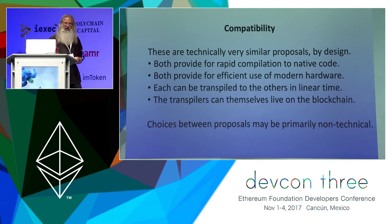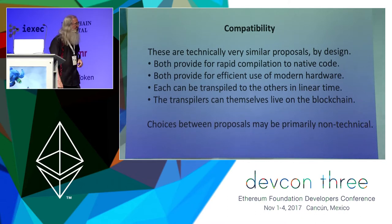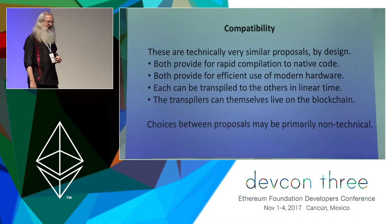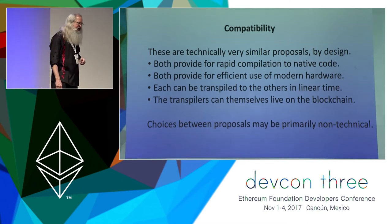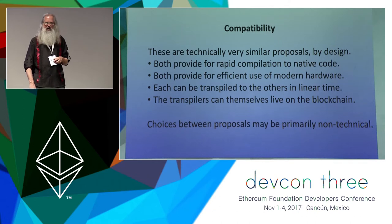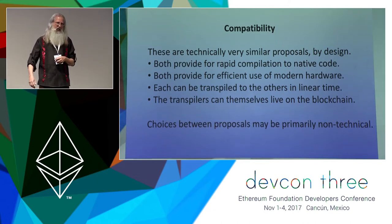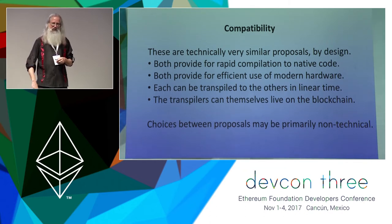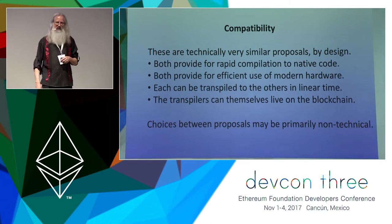So we've got technically very similar proposals that both provide for very fast compilation to native code. It could be done as a JIT, but we've come to realize Ethereum cannot do JITs — they are actually exploitable. If you find or write a contract which takes a long time to compile with a JIT but requires very little gas to run, and you start hammering those contracts, you can do a really nice DOS attack. So if you're going to do any compiling, you've got to do it upfront at deployment time.